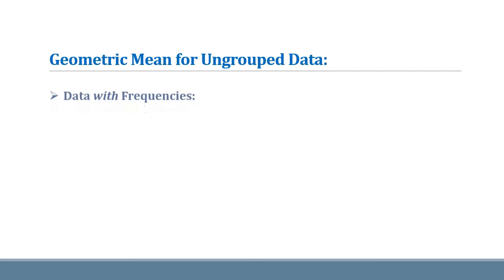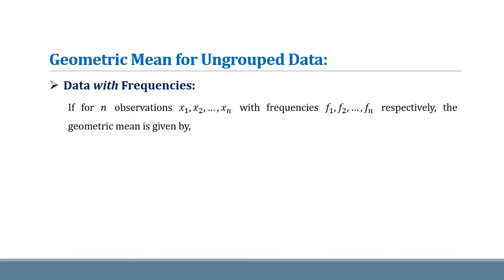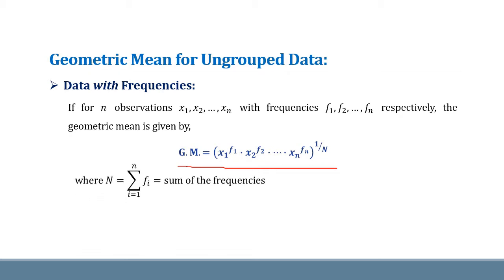Now we see the geometric mean for ungrouped data with given frequencies. If for n observations x1, x2 up to xn with frequencies f1, f2 up to fn respectively, the geometric mean is given by this formula: the product of xi to the power fi, and the capital N-th root of that product. Here, capital N is the total number of frequencies, that is the sum of all the frequencies.